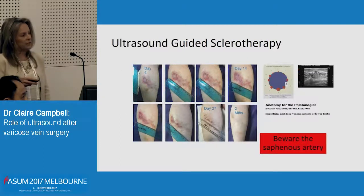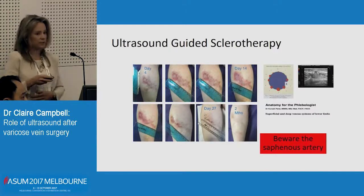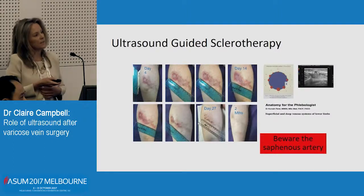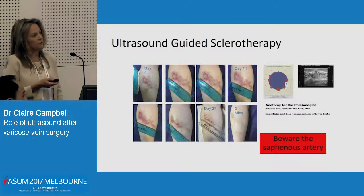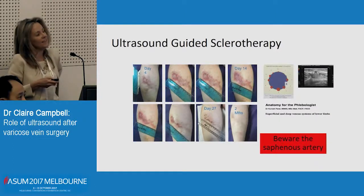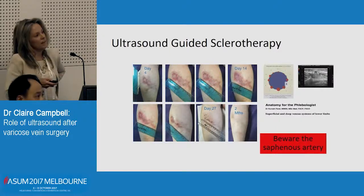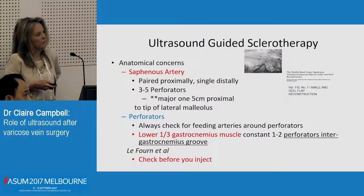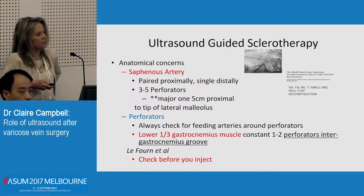I want to caution people who are injecting the small saphenous vein near the sural nerve. If you're worried about thermal ablation damaging the sural nerve, you've got to be really careful with the saphenous artery. There is a saphenous artery that lies between about 3 and 6 o'clock in patients in the saphenous sheath or the saphenous eye. It often has some major perforating branches and one down near the lateral malleolus. Just be careful when you're looking at perforators — mark out where they are, identify arteries that might be nearby, and check before you inject.